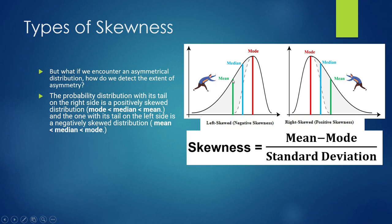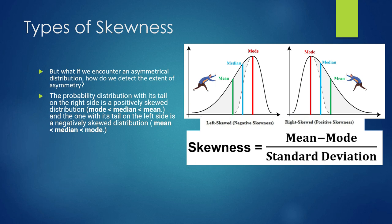Generally we consider mean as a good measure of central tendency, but with skewed data we should consider the median as a better estimate. Mean gets affected by outlier points — they may be few in number but high in magnitude, shifting the mean. Skewness helps us understand data quality and do proper analysis.